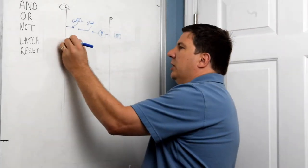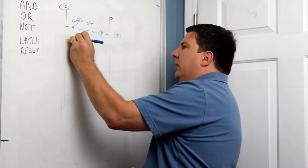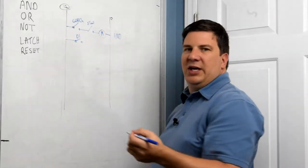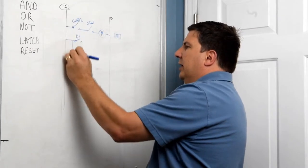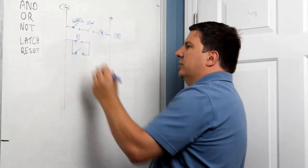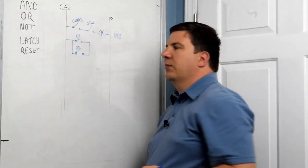So if we have a two-doored car, we want, let's just say door one. If we turn that on or we have door two, that can turn it on. So if either of those two doors turn it on, we have that.